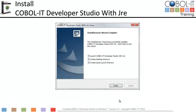When the install is complete, note the checkboxes that are selected by default. These settings will create desktop and quick launch shortcuts, and will launch the COBOL IT Developer Studio with JRE after you have left the setup wizard. Keep these default settings. Click Finish to complete the install and exit the wizard.